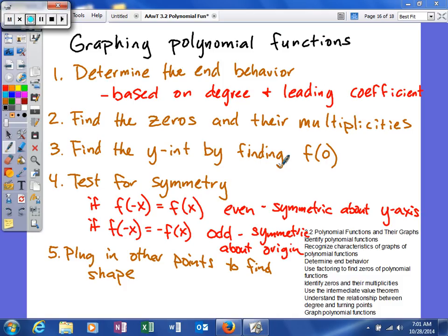The second thing we're going to do is find the zeros and their multiplicities. So we're going to use that concept of multiplicities to help us figure out what happens at those x-intercepts. After that, we're going to find our y-intercept by plugging in zero into our function.